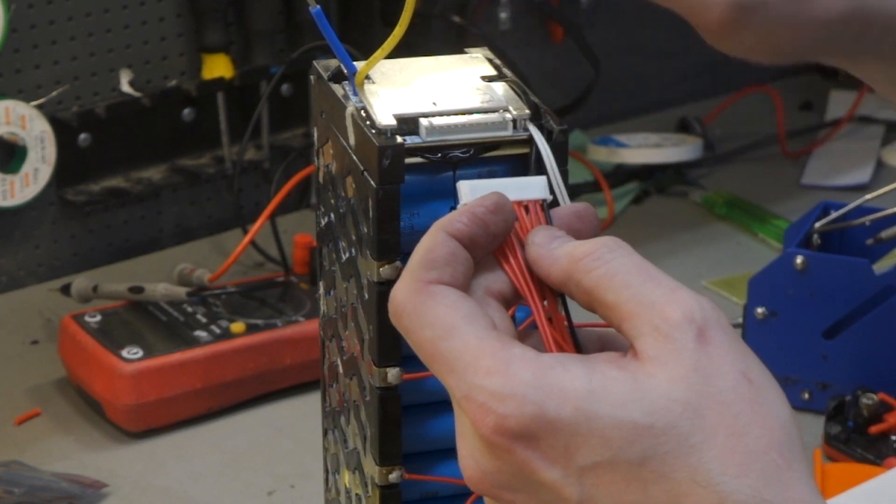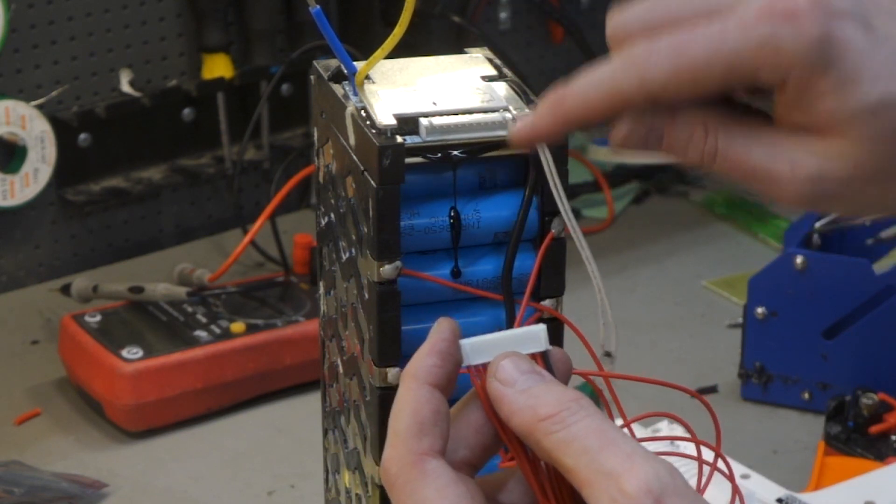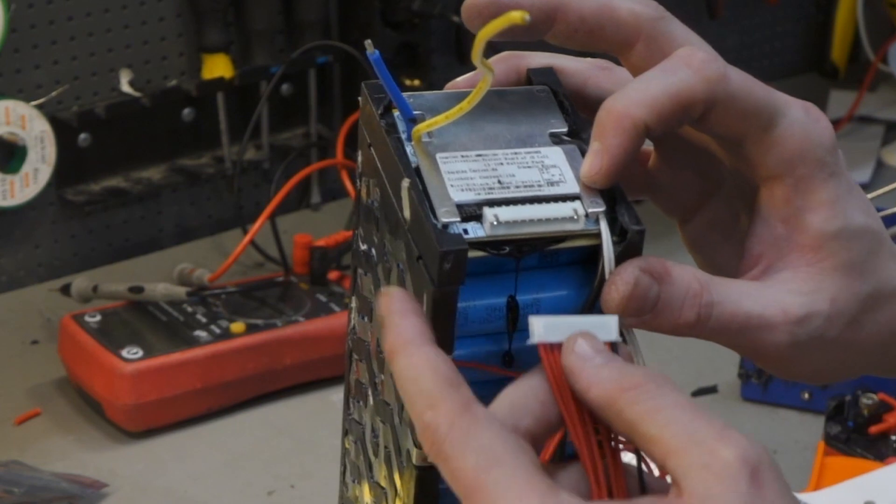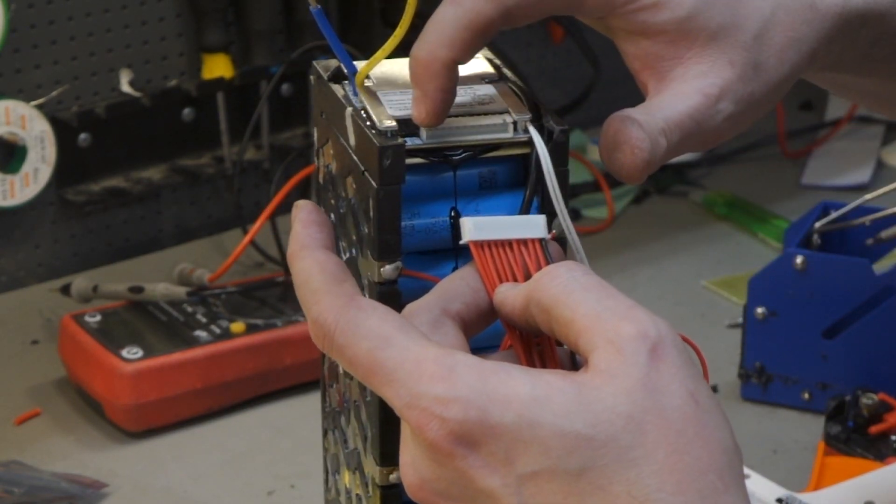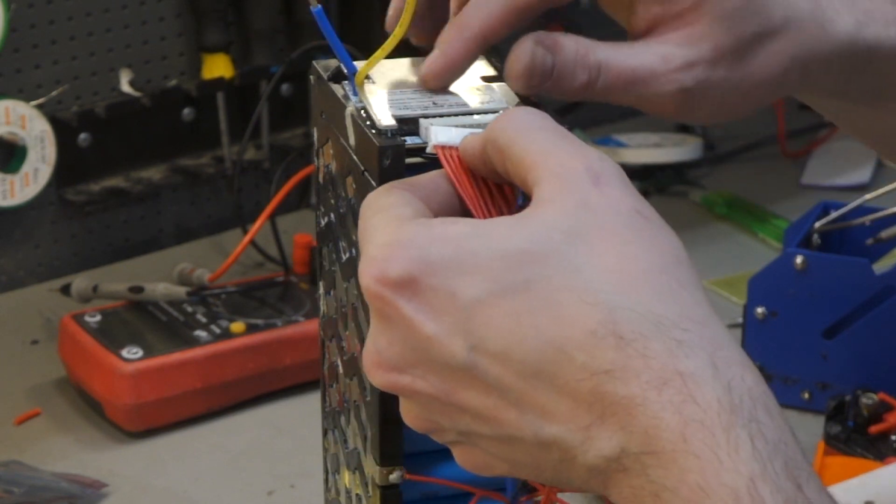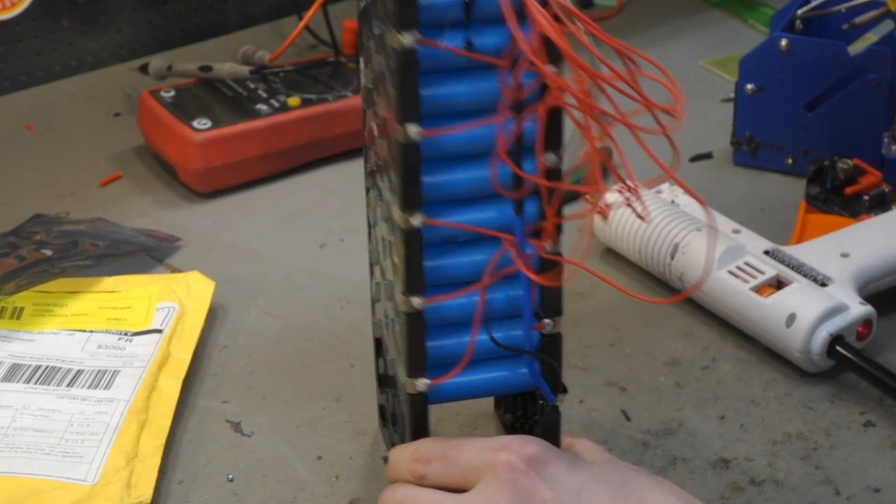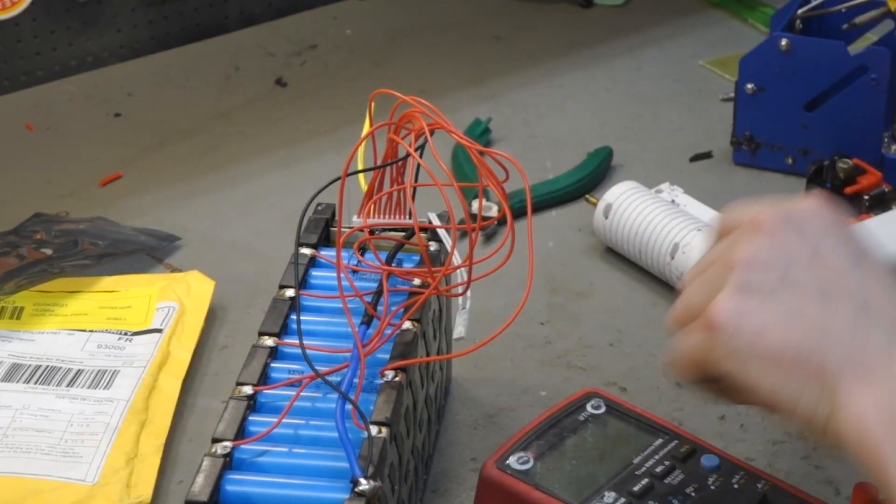Now we should connect this. If there's a small spark, you have connected it in the wrong polarity. You can usually check on the BMS if you remove the bottom and see which is battery minus and battery positive. The writing here is very, very small, but it says battery minus is over here and battery positive is over there.